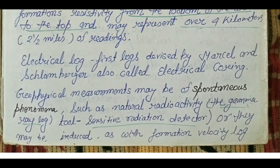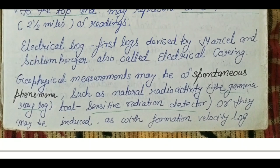Geophysical measurements can be of two types: spontaneous — for example, natural radioactivity where we are directly detecting gamma rays — or induced — for example, sonic and density logs, where we emit radiation into the formation and measure how the formation reacts to that radiation.